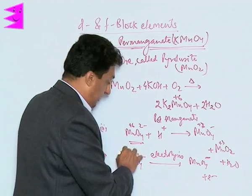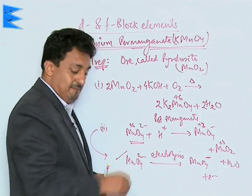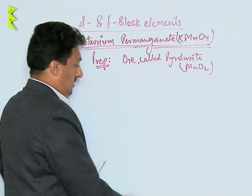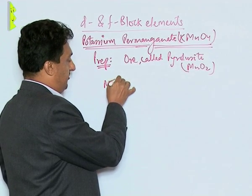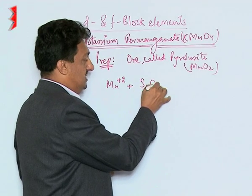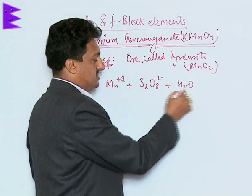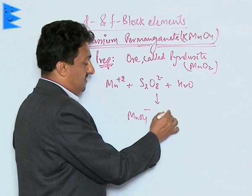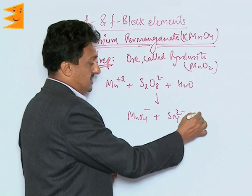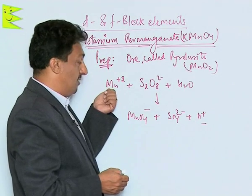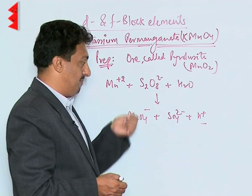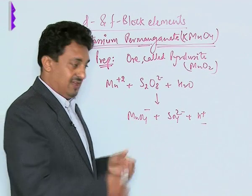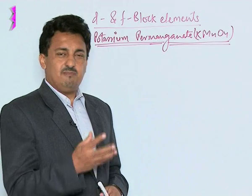By electrolysis, MnO4²⁻ ion gives MnO4⁻ and an electron, producing the same potassium permanganate. In the laboratory, KMnO4 is prepared differently — by the oxidation of Mn²⁺ ion by peroxydisulfate ion. The peroxydisulfate ion oxidizes Mn²⁺ to MnO4⁻ and itself gets reduced to sulfate plus H⁺ ions. In this lab method, manganese is brought to the +7 oxidation state.